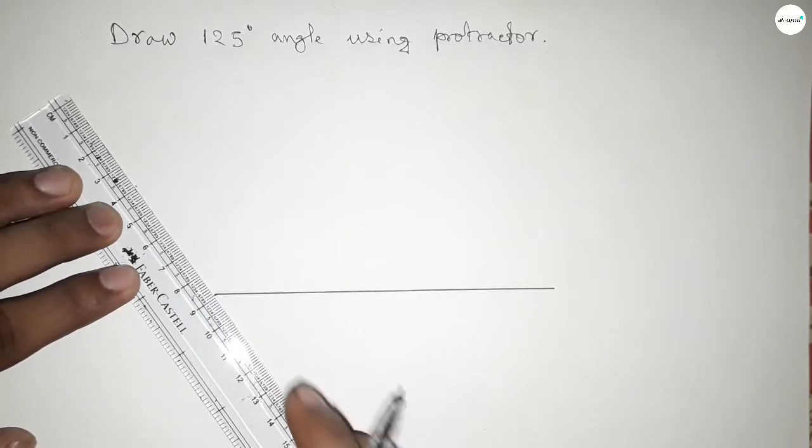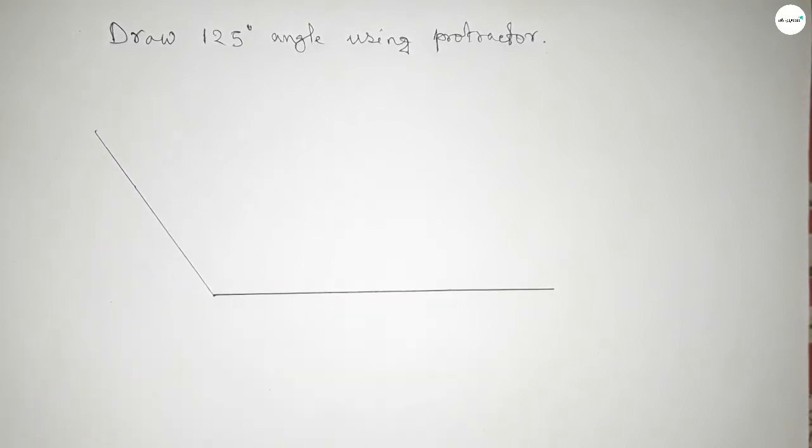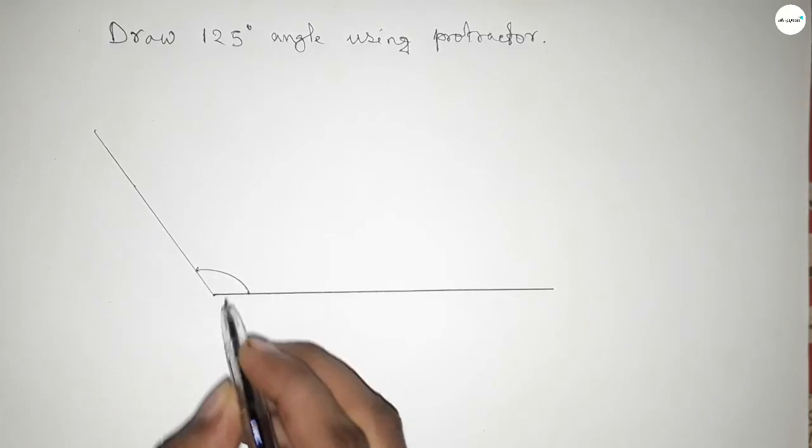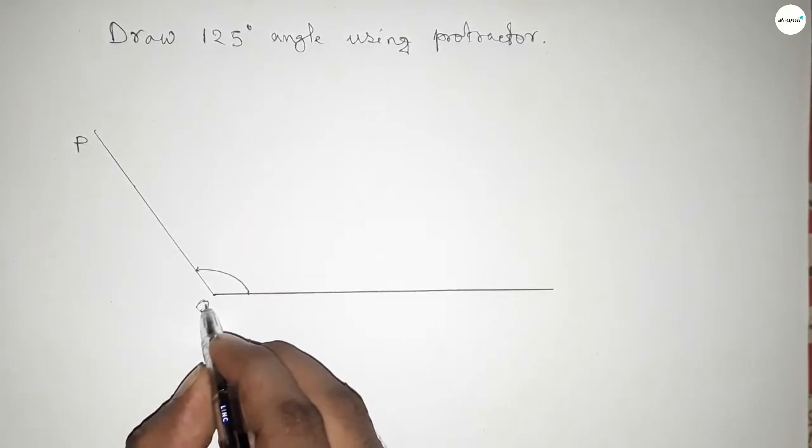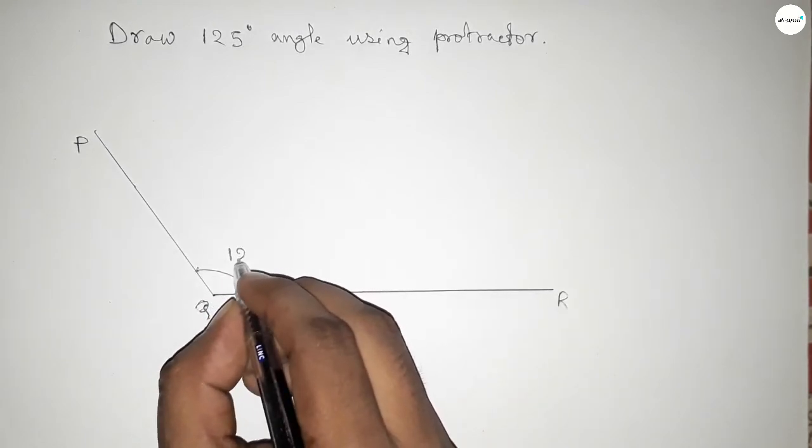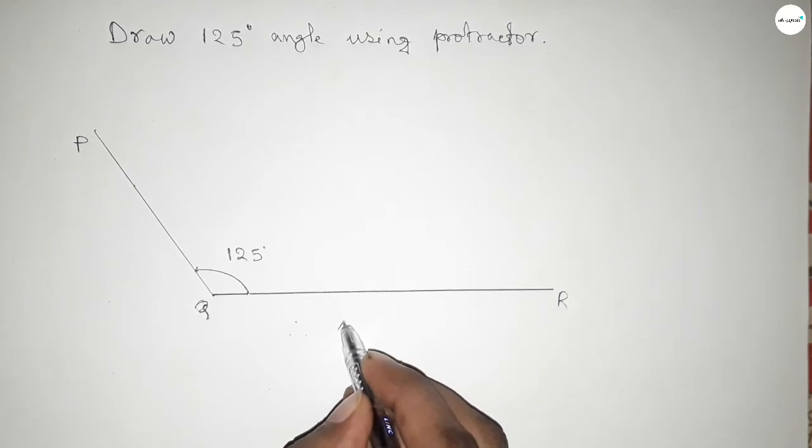Now joining this to get 125 degree angle. So this is P, Q, and R. So angle PQR equal to 125 degrees. Therefore we can write angle PQR equal to 125 degree angle.